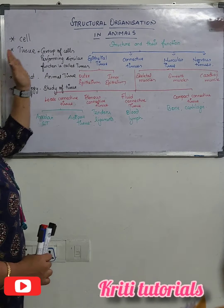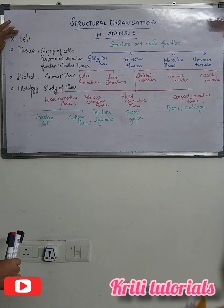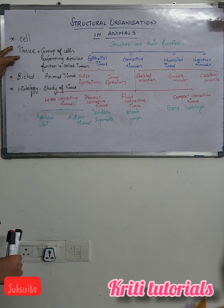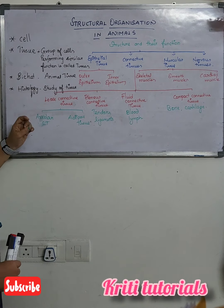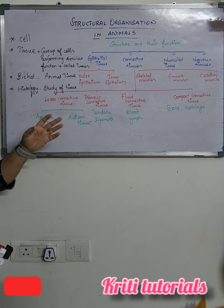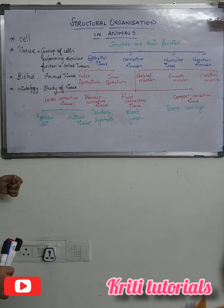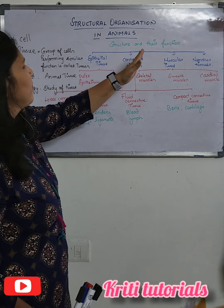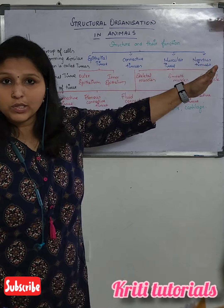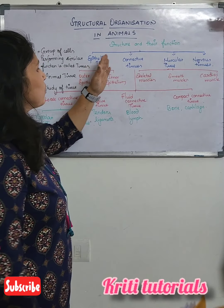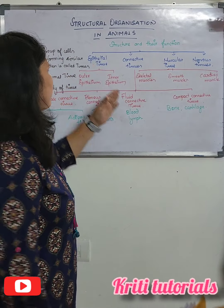To summarize structural organization in animals: we should know about the cell, and about tissues. Bichat was the person who first coined the term 'animal tissue,' and the study of tissue is called histology. Based on their structure and functions, animal tissues are classified into four major types: epithelial tissues, connective tissues, muscular tissues, and nervous tissues.